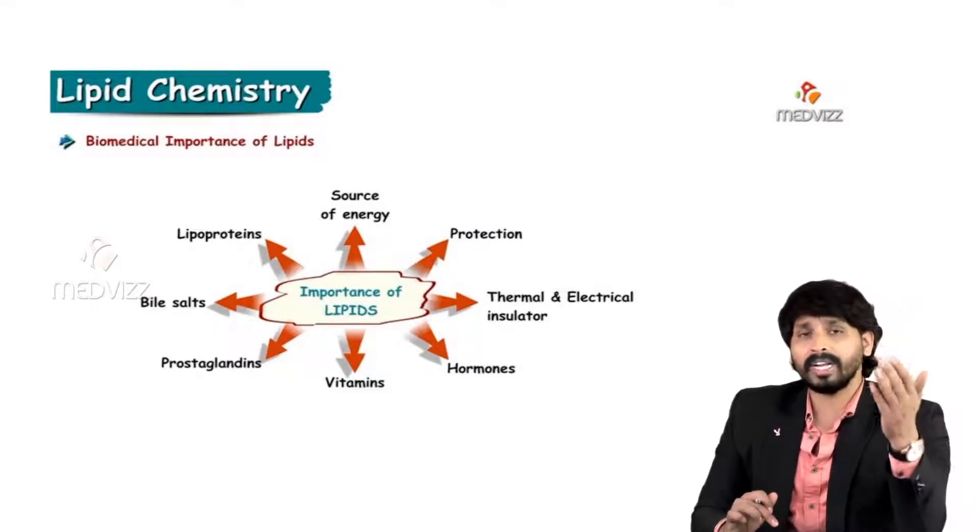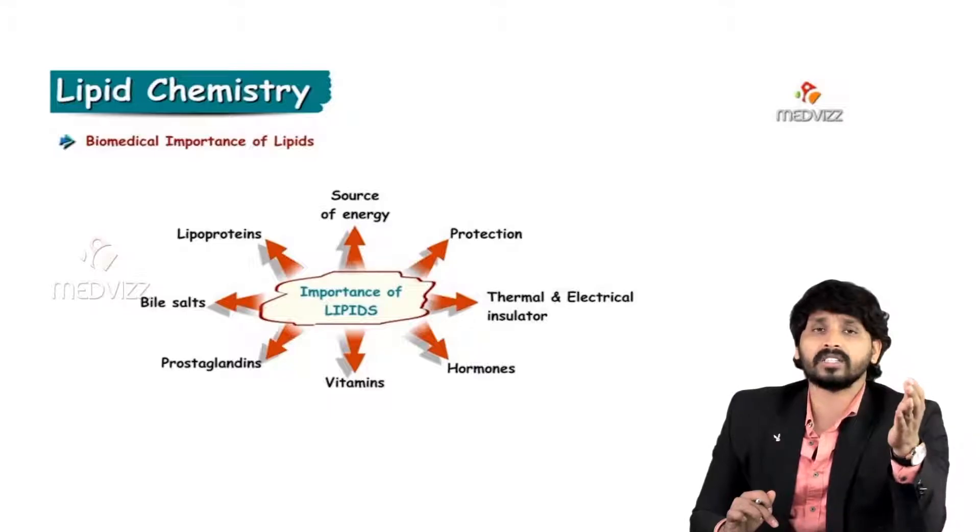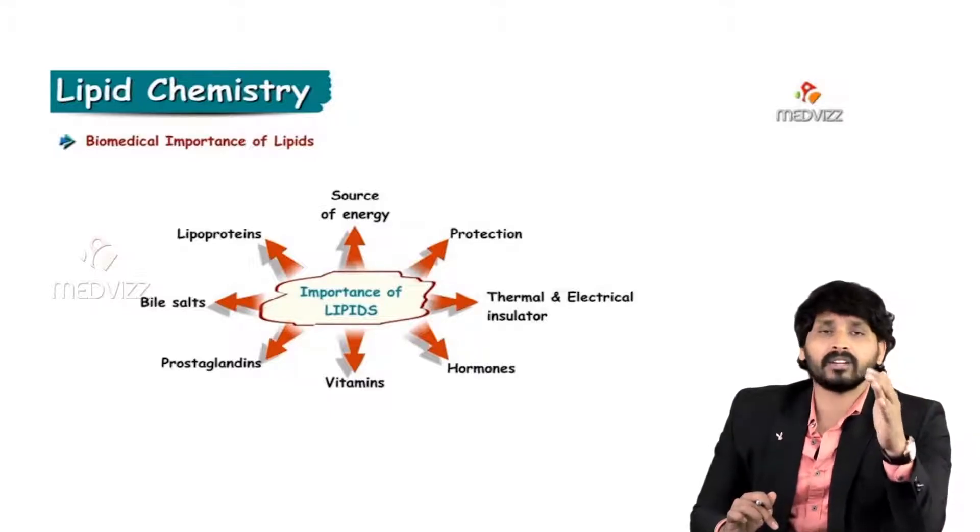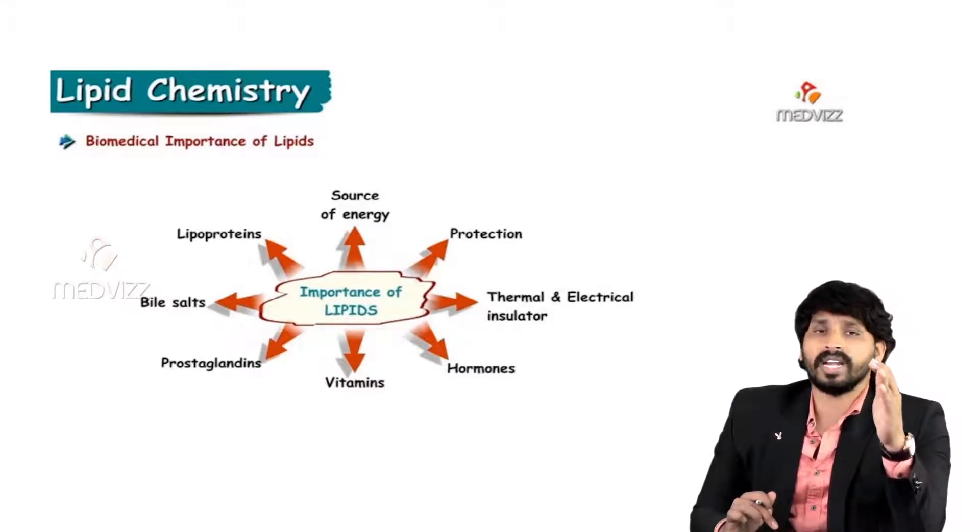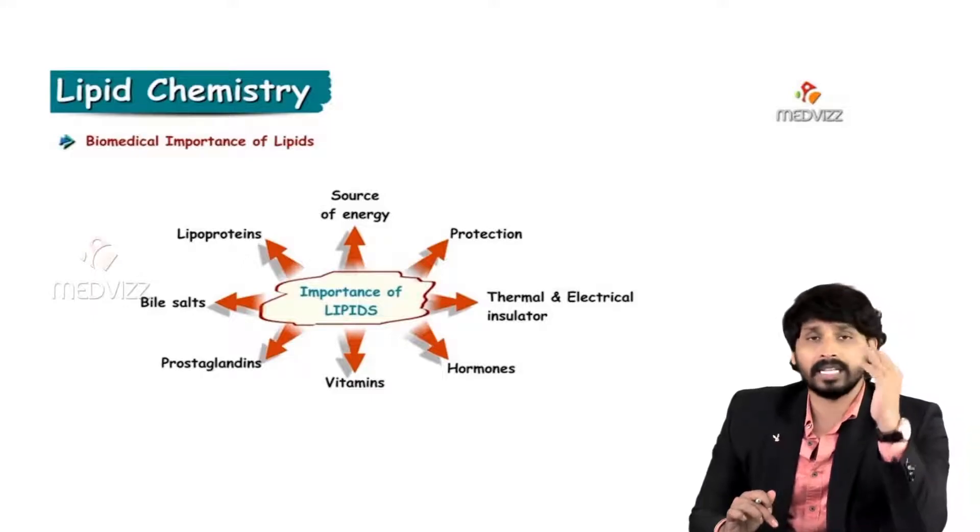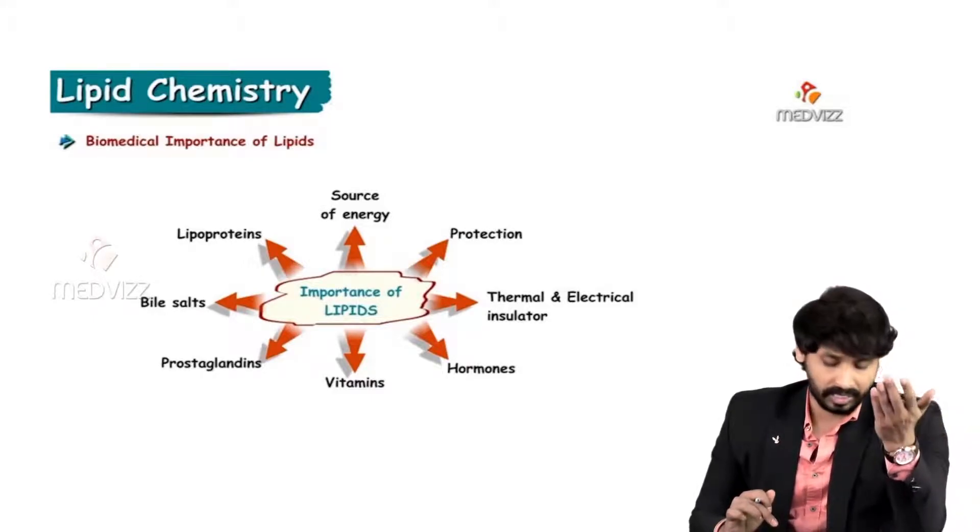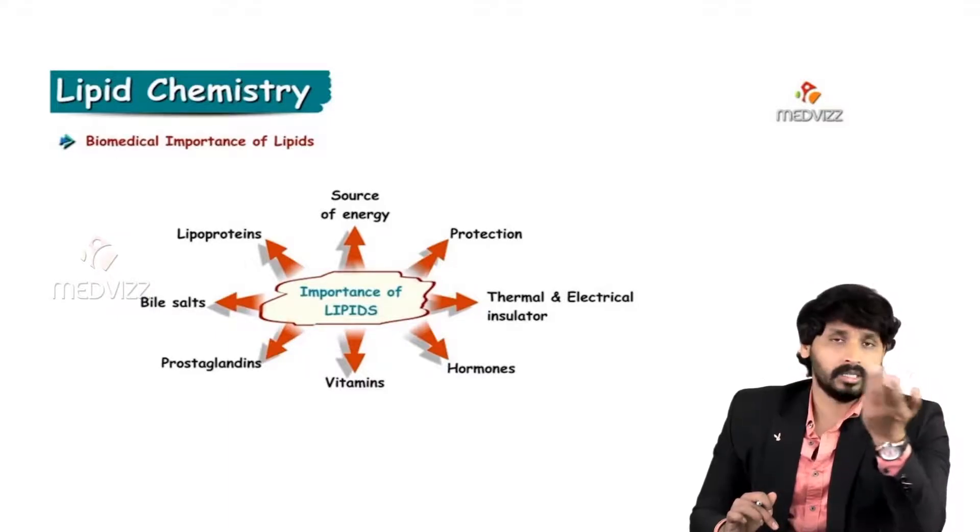Vitamins such as vitamin D are also lipid in nature. Prostaglandins are also lipid in nature—they are indicators of inflammation and help identify the area of disease or disorder in the cell. Bile salts aid in emulsification, and lipoproteins are carriers of lipids in the plasma.